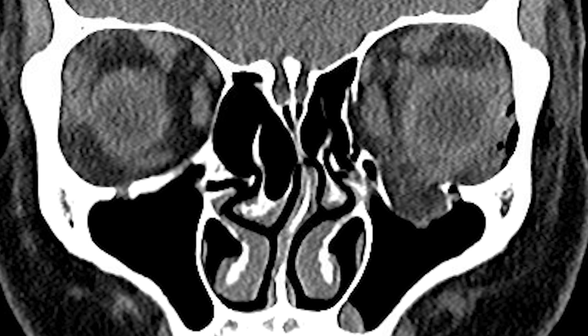The orbit is the bony cavity that surrounds the eyeball and supports the eye and the ocular structures like the extraocular muscles and the optic nerve. The floor of the orbit is what the orbital contents — the eye and all of its associated structures — stand on, kind of like we would stand on a floor.